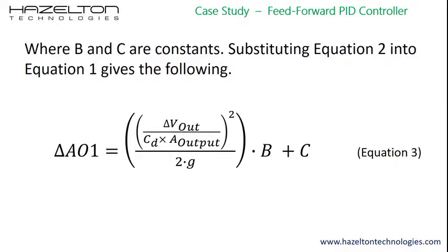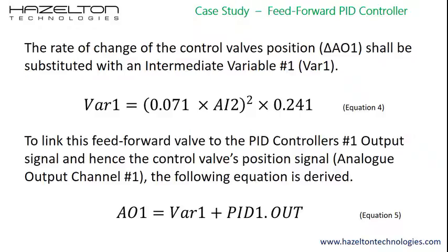Where B and C are constants, substituting equation 2 into equation 1 gives the following. The analog input signal AI2 for the fluid flow rate shall be substituted into equation 3 for V out. The constants shall also be inserted into equation 3, which shall give the following equation. The rate of change of the control valve's position, delta AO1, shall be substituted with an intermediate variable, VAR1.